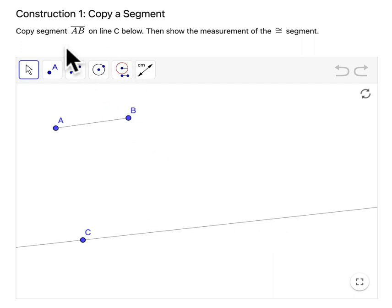Hello, welcome. In this video, we're going to use GeoGebra to do a basic copying of a segment as a construction. So we have this segment AB, and we want to copy it.